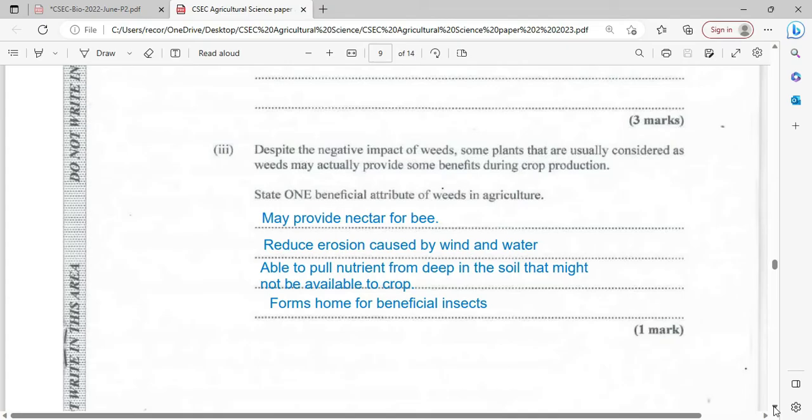Able to pull nutrient from deep in the soil that might not be available to our vegetable crop. There are some weeds that have really deep roots and they are able to pull the nutrient from way down upward into the layer that can be accessed by vegetable crop. They fall off and become a part of the crop, forming home for beneficial insects.